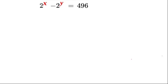As you can see, we have just one equation but we have a positive value with 496. So we're going to say that 496 is greater than 0. Therefore we can deduce that 2 to the power of x is greater than 2 to the power of y.